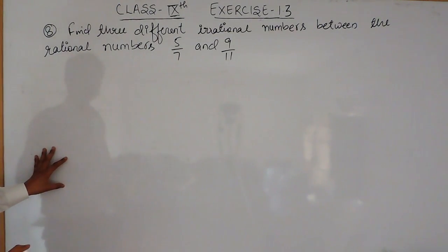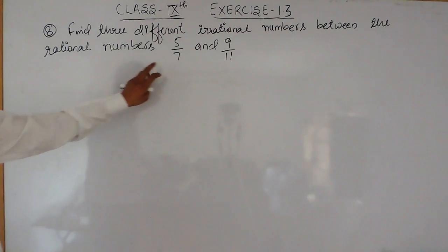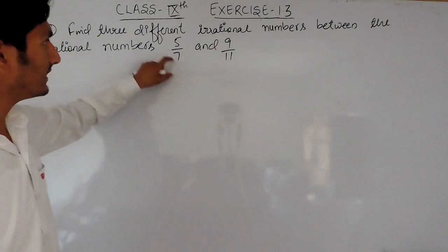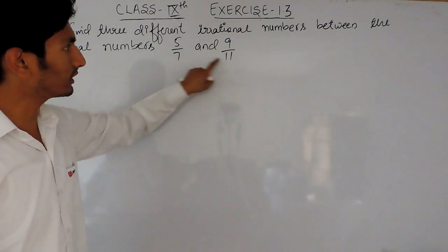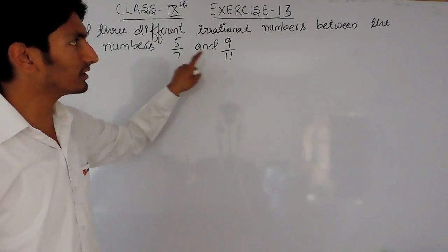The question says find 3 different irrational numbers between the rational numbers 5/7 and 9/11. Obviously these are in the form of p upon q where q is not equal to 0, so these are rational numbers. You have to insert three irrationals between these two rational numbers.